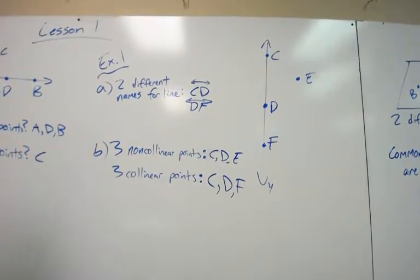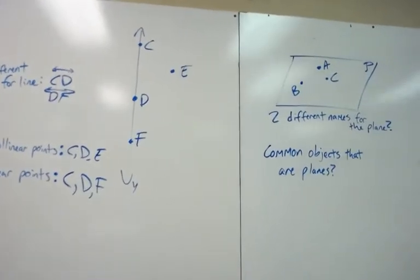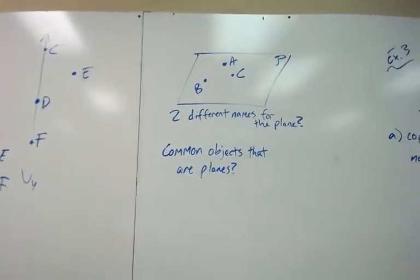You could have C, F, E, D, E, F, any of those. But that is lines. Line is created by two points. Now, let's look at planes.